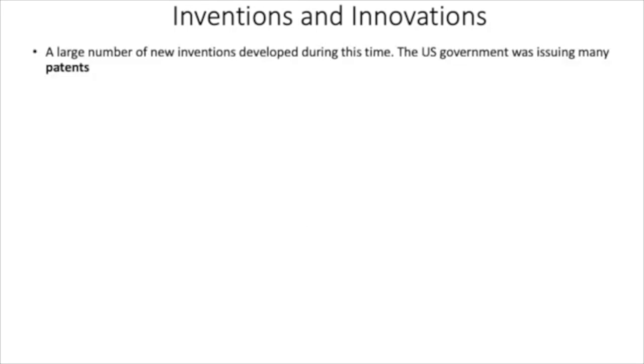Now, obviously, a big driving force in the second industrial revolution was the inventions and innovations of the period. A large number of new inventions developed during this time. The U.S. government was issuing many patents, and patents were the government protecting intellectual property on something like an invention or a piece of machinery or a piece of technology.